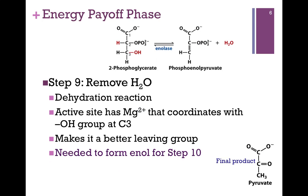In Step 9, we're going to dehydrate carbons 2 and 3 — that is, we're going to remove a hydrogen from carbon 2 and an OH from carbon 3. It's a dehydration reaction, and we create a carbon-carbon double bond. The active site on the enzyme enolase has a magnesium ion that coordinates with that hydroxyl group on carbon number 3, making it a better leaving group and making the chemistry possible. We need this enol form for our final product in Step 10. This is again a readily reversible reaction.